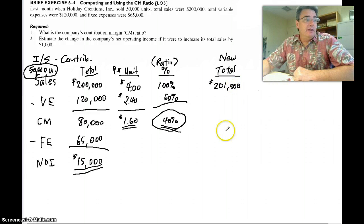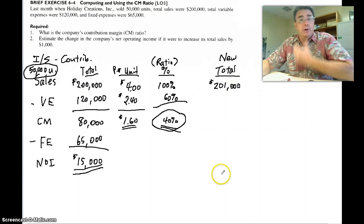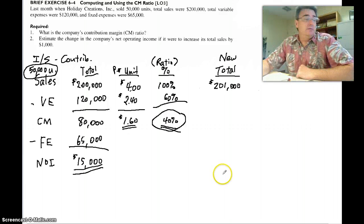Actually, we could just go down and recalculate all these numbers and come up with a new net operating income. But there's actually a quicker way. We have a powerful number here. Contribution margin ratio. Let's estimate. That's what it says. Estimate the change.